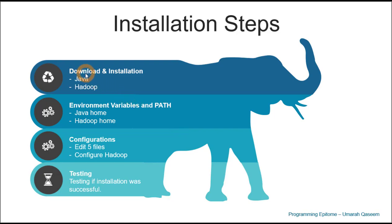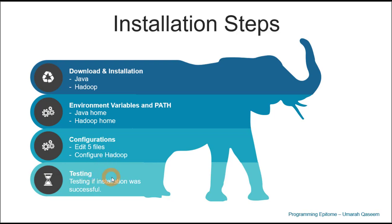We will begin with downloading the correct version of Java and Hadoop and their installation. Then we will set up the environment and path variables for Java as well as Hadoop. In the configuration step, we will edit five files and then configure the bin folder of Hadoop. And at the end, we will test if our installation was successful or not.